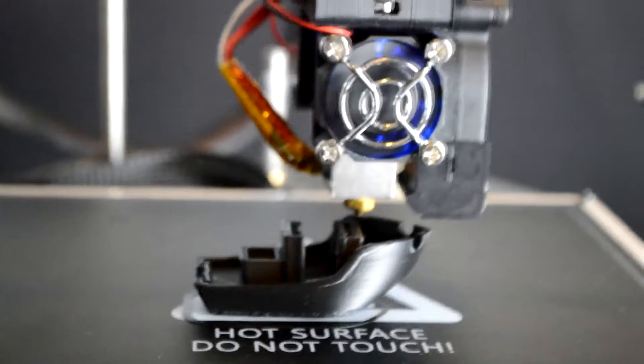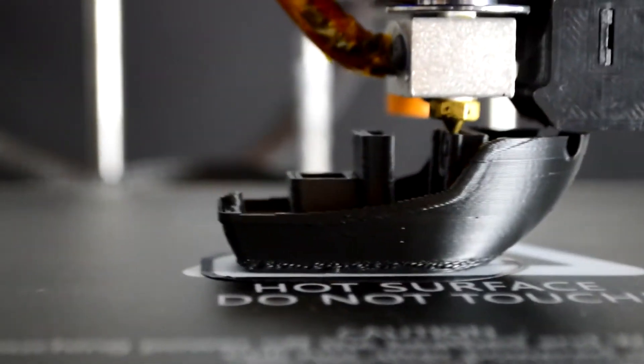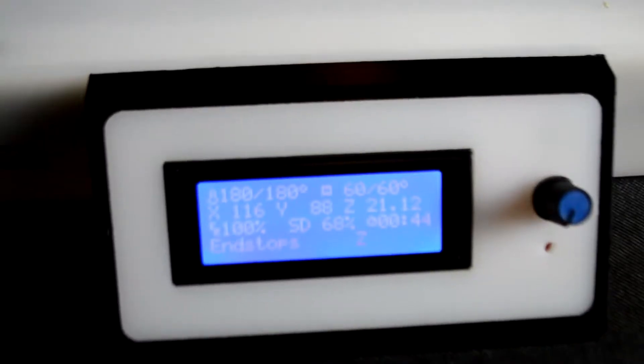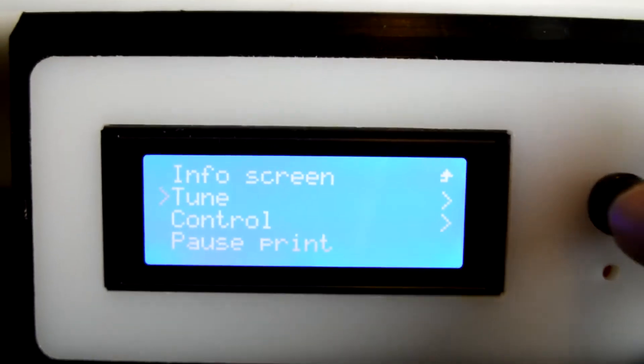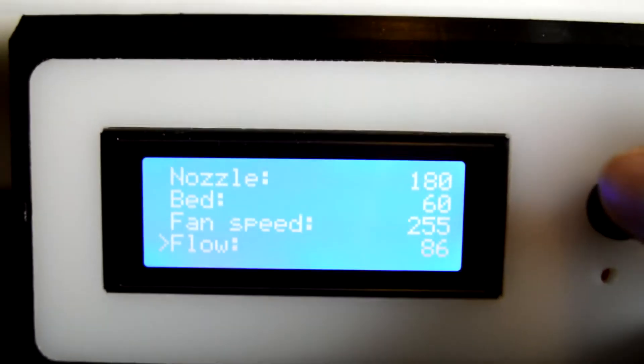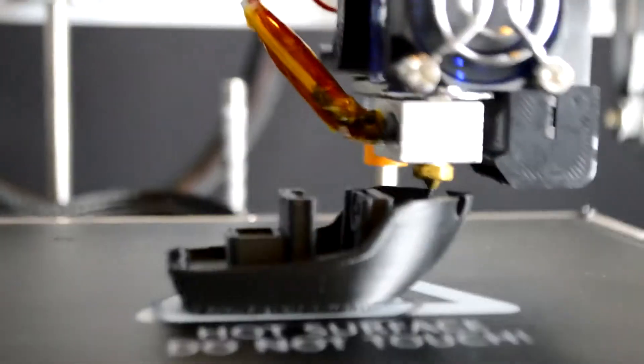And I have actually had to adjust the flow rate to get it to print. As you can see, on the lower layers it was over-extruding pretty badly. I then went into these settings, into tune, and reduced the flow to 86%. And that flow rate got me a much nicer print.